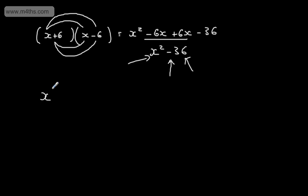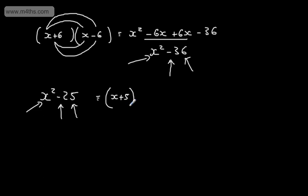So if we have for example x squared minus 25, x squared is a square number, 25 is a square number, and we have our difference. So we could write that this would be x plus 5 multiplied by x minus 5. If you were unsure, go ahead and expand it out — you would get x squared minus 5x plus 5x minus 25, and the terms in x would cancel.